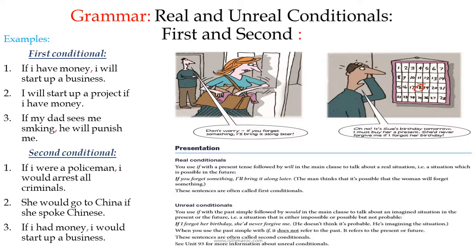Unreal conditionals — the second conditional: you use 'if' with the past simple followed by 'would' in the main clause to talk about an imagined situation in the present or future — a situation that is impossible or possible but not probable. Example: 'If I forgot her birthday, she would never forgive me.' When you use the past simple with 'if,' it doesn't refer to the past; it refers to the present or future.